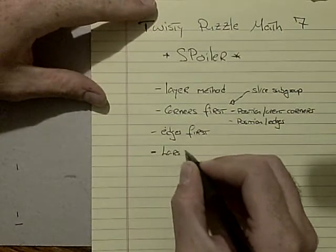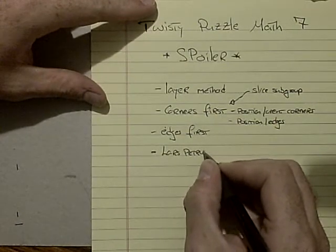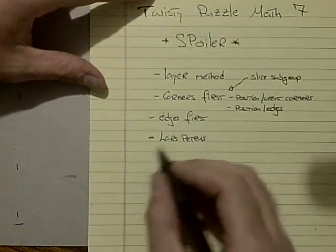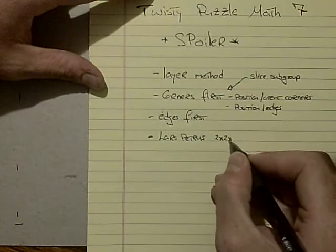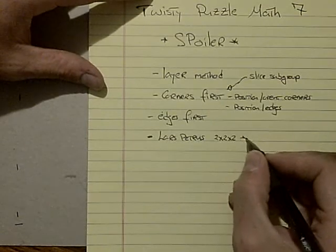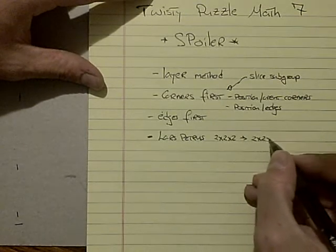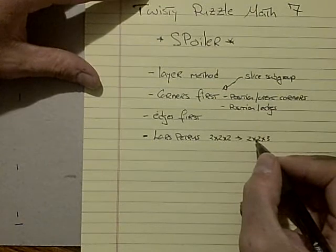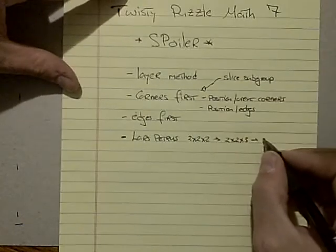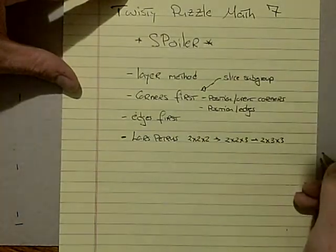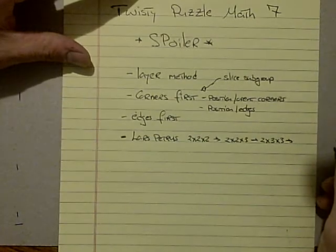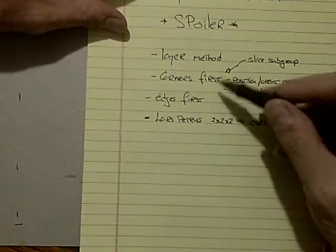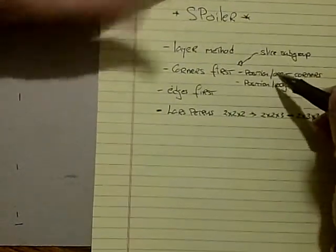There's also a method that was created by a guy named Lars Petrus. If you Google Lars Petrus, you'll find it. It involves solving a 2x2 chunk, then solving a 2x2x3 chunk, so you extend it. Then you extend that to a 2x3x3 chunk, and then you finish out the final layer. So these are some fun ways to do it.